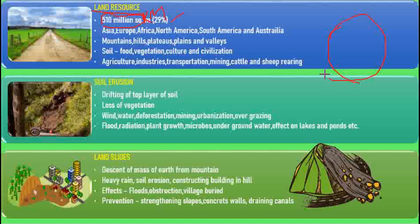The continents include Asia, Europe, Africa, North America, South America, and Australia. These are surrounded by water, and together they make up what we call land. The northern hemisphere has more land concentration.